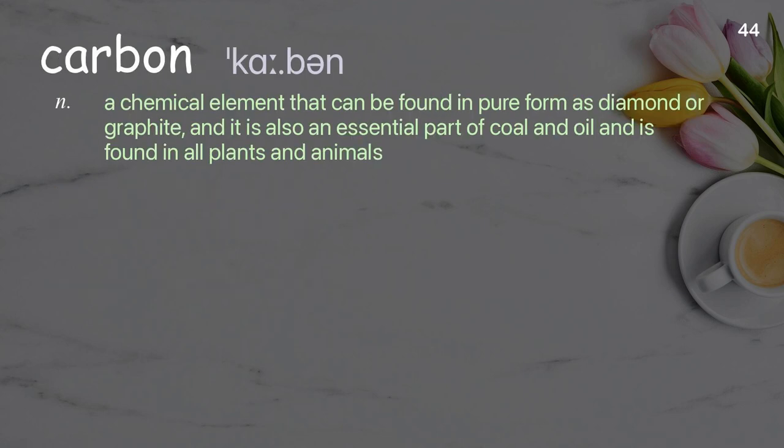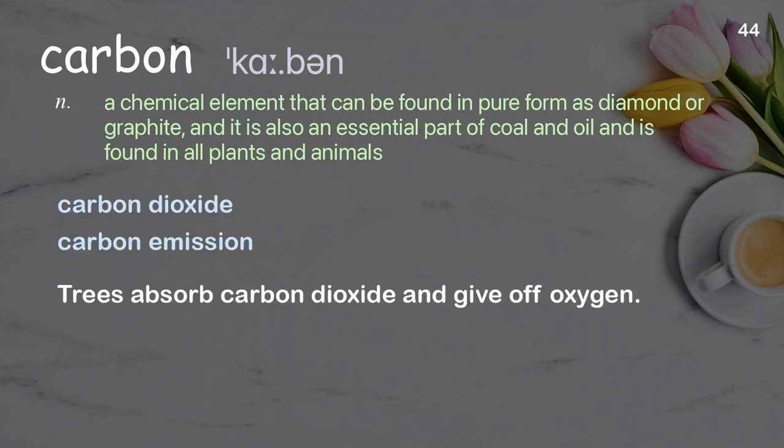Carbon: a chemical element that can be found in pure form as diamond or graphite, and is also an essential part of coal and oil and is found in all plants and animals. Examples: carbon dioxide. Trees absorb carbon dioxide and give off oxygen.